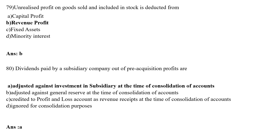Dividend paid by a subsidiary company out of Pre-Acquisition Profit is: Option A adjusted against Investment in Subsidiary at the time of Consolidation, Option B adjusted against Consolidation of Account, Option C Credited to Profit and Loss Account as Revenue Receipt, Option D Ignored for Consolidation Purpose. The correct answer is Option A — adjusted against Investment in Subsidiary at the time of Consolidation of Account.